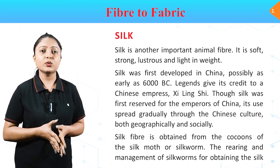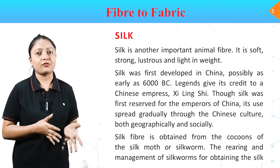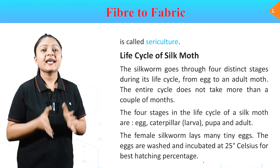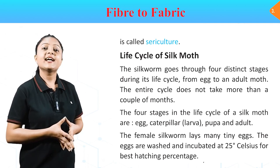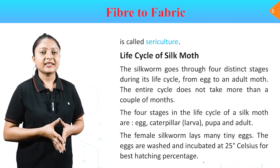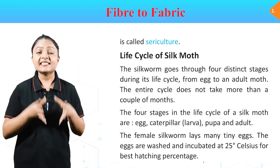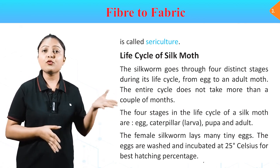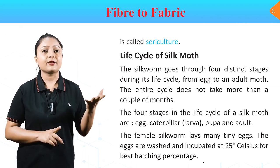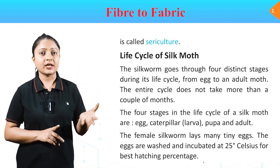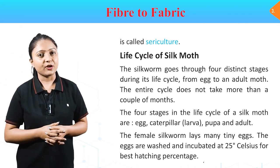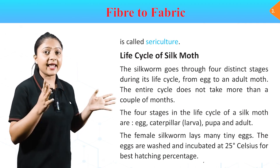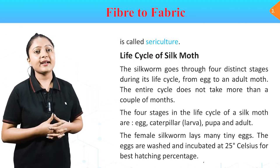Silk fiber is obtained from the cocoons of the silk moth or silkworm. The rearing and management of silkworms for obtaining silk is called sericulture. Life cycle of the silk moth: the silkworm goes through four distinct stages during its life cycle — egg, caterpillar (larva), pupa and adult. The entire cycle does not take more than a couple of months.